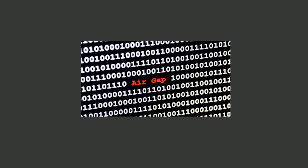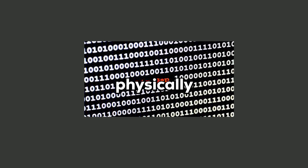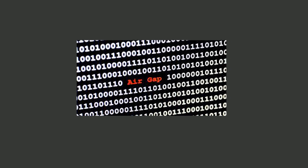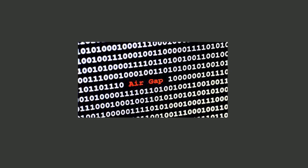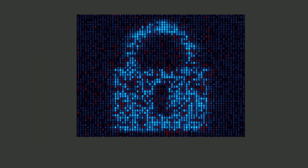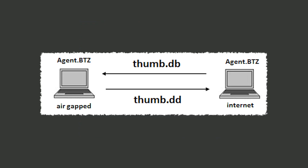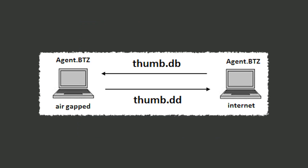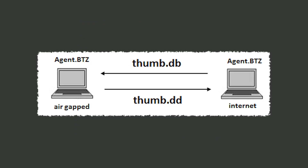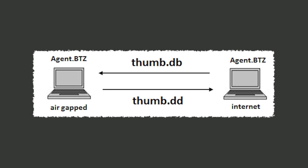Air-gap malware is crafted to breach systems that are physically isolated from the internet, often using unconventional methods like infected USB drives to cross the gap. Although these networks are typically more secure, the impact of such an attack can be catastrophic. Agent BTZ is a notable example that managed to bridge the air gap and infect secure systems.